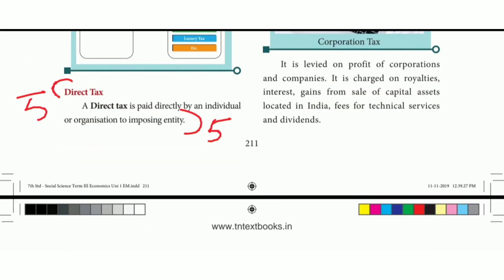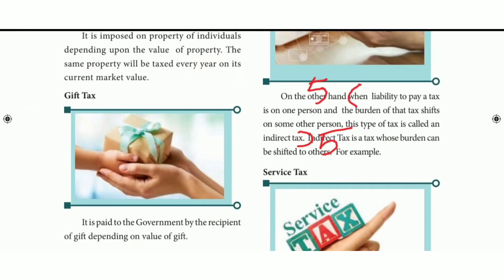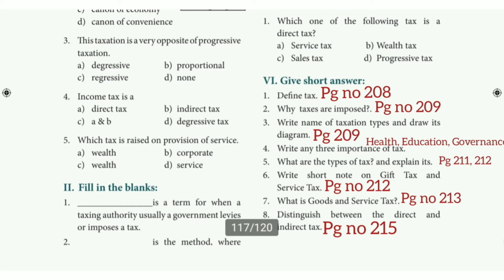Continuing types of tax: direct tax — refer to the two lines under its heading. Then indirect tax — refer to the heading, the picture key, the paragraph, second line and fourth line. Indirect tax, second line and fourth line.